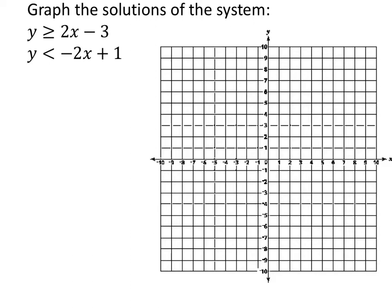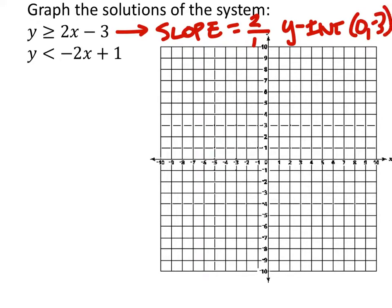Alright, so this top equation, which we'll do in red, we have a slope. That's nice, both of these are in slope-intercept form. 2 over 1 with the y-intercept of 0, negative 3. So 0, negative 3 is right here.